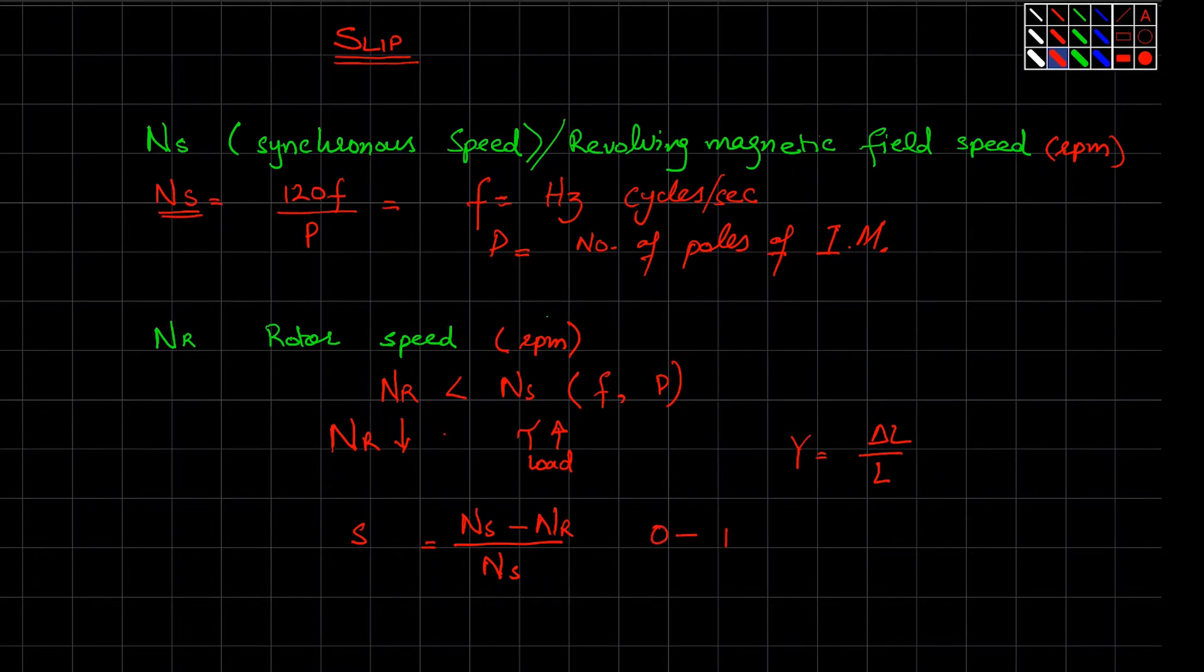As you can see, this is a unitless quantity. If I multiply it by 100, this becomes percentage. We can say that when Ns is equals to Nr, your rotor will be running at Nr equals to Ns.